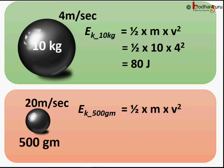Now, coming to the smaller ball, the mass is 500 grams. So, we need to convert it into kgs. So, 500 gram is equal to 0.5 kg and speed here is equal to 20 meter per second.